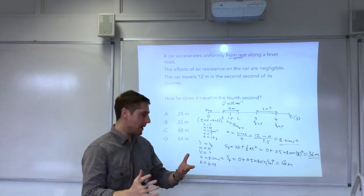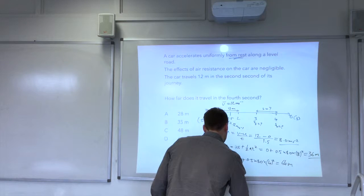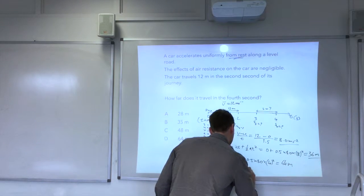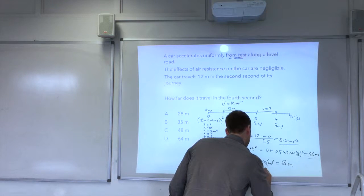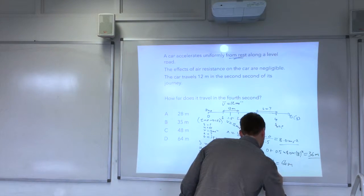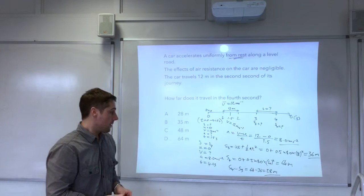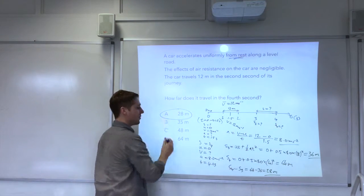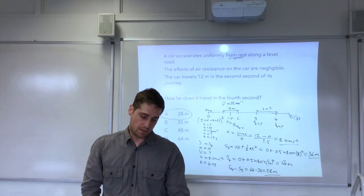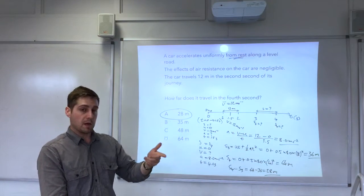Last stage to work out what we actually want to know is s4 minus s3. That's equal to 64 minus 36, which is 28 metres. 28 metres, that's A. And that was the answer in the mark scheme.